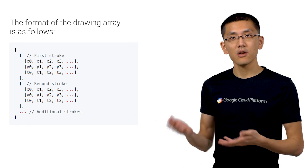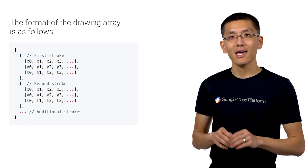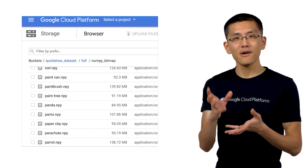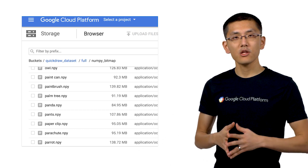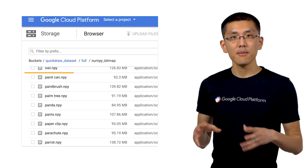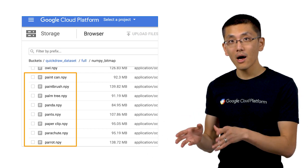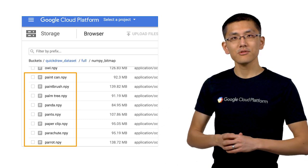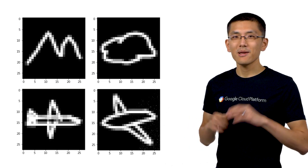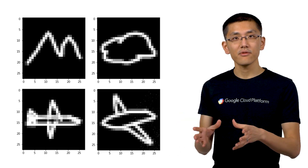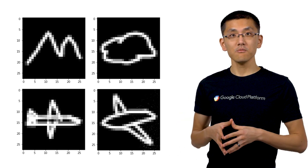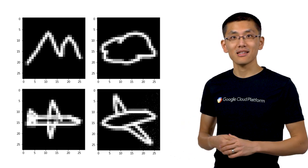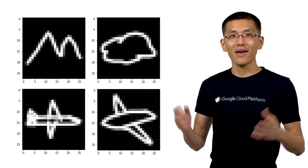The binary format comes with examples of how to read these files using both Python and Node.js. The fourth format is interesting — it takes the simplified data and renders it as a 28 by 28 grayscale bitmap in NumPy .npy format, which you can load using np.load. Why 28 by 28 pixels? It's a perfect replacement for any existing code you might have for processing MNIST data. So if you're looking for something fancier than 10 handwritten digits, you can try processing over 300 different classes of hand-drawn doodles.